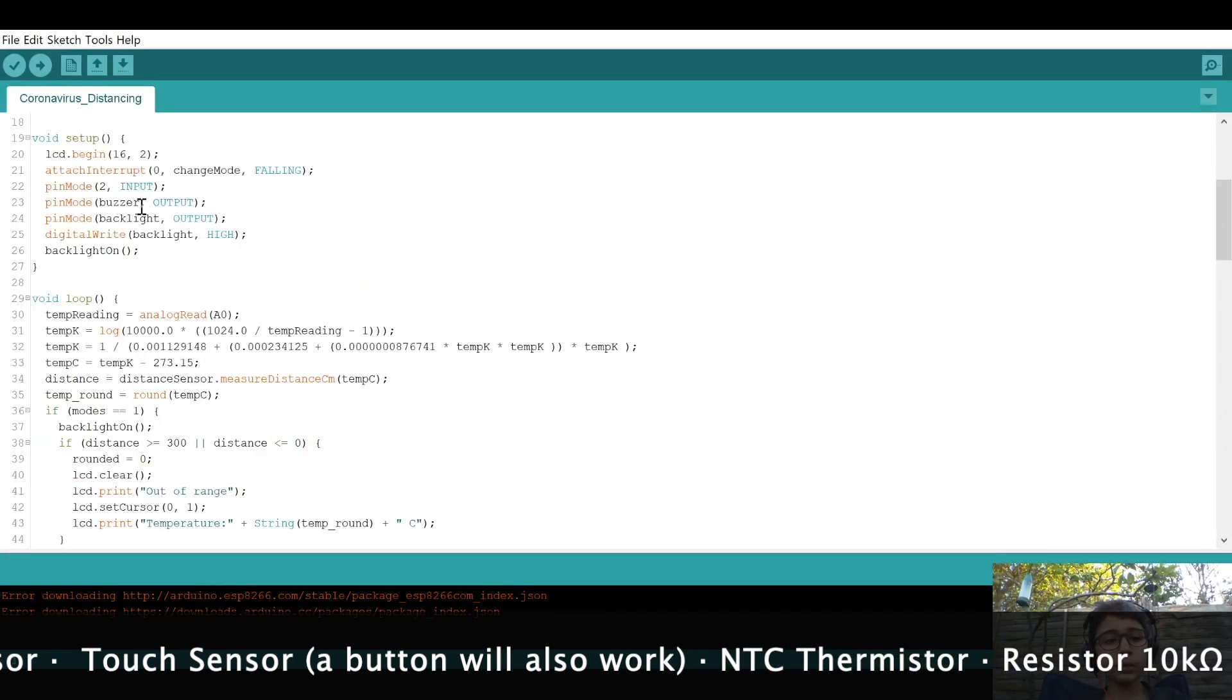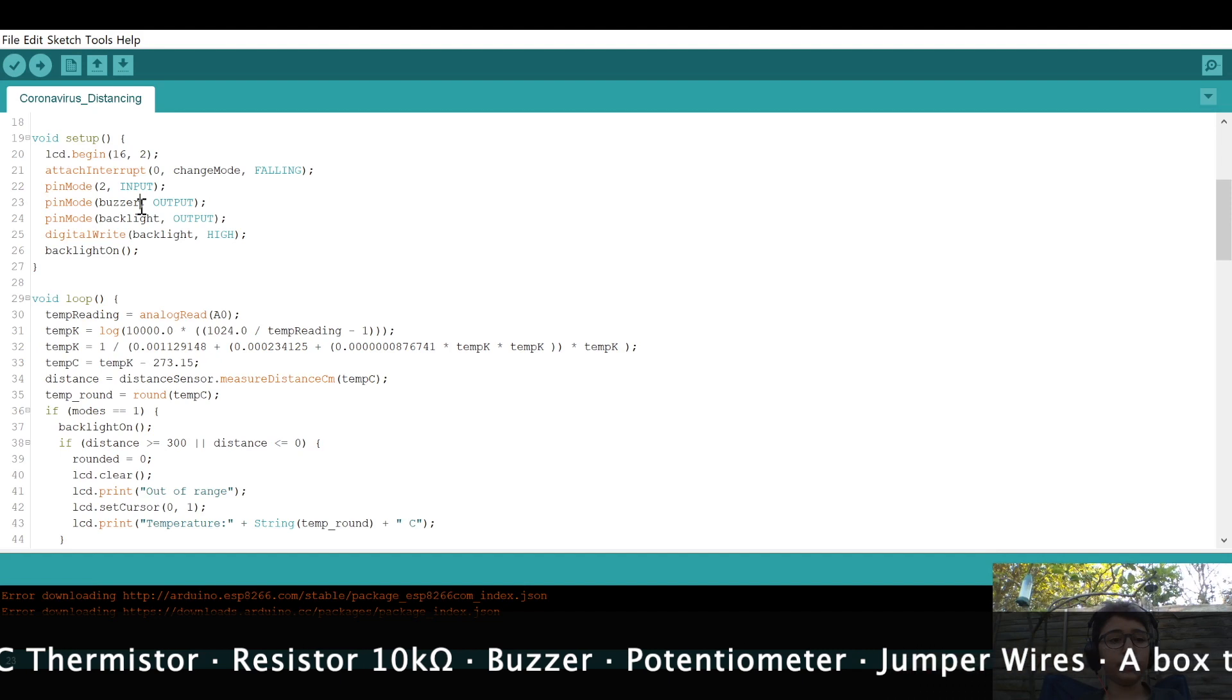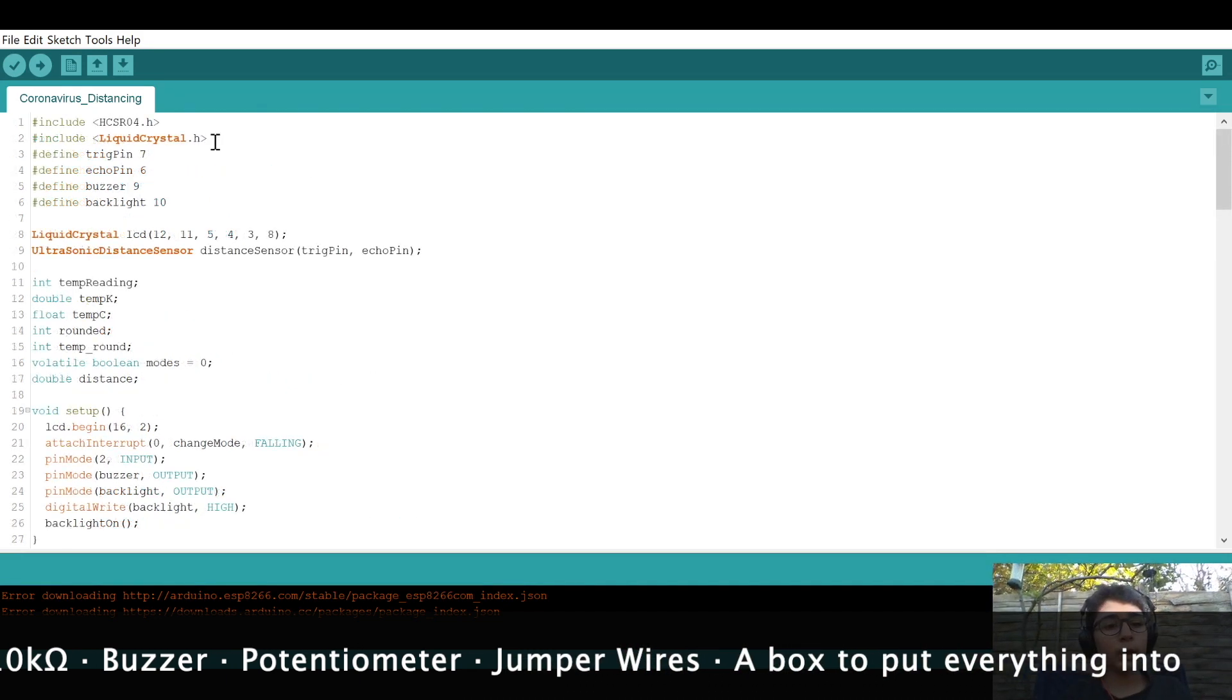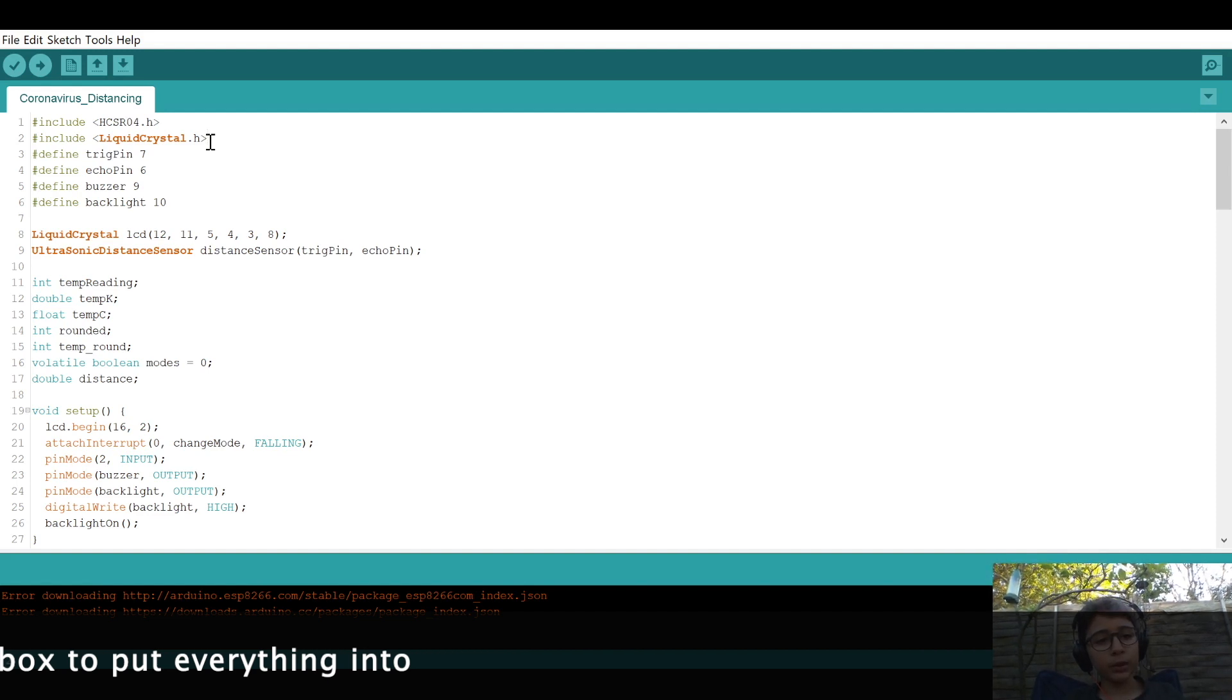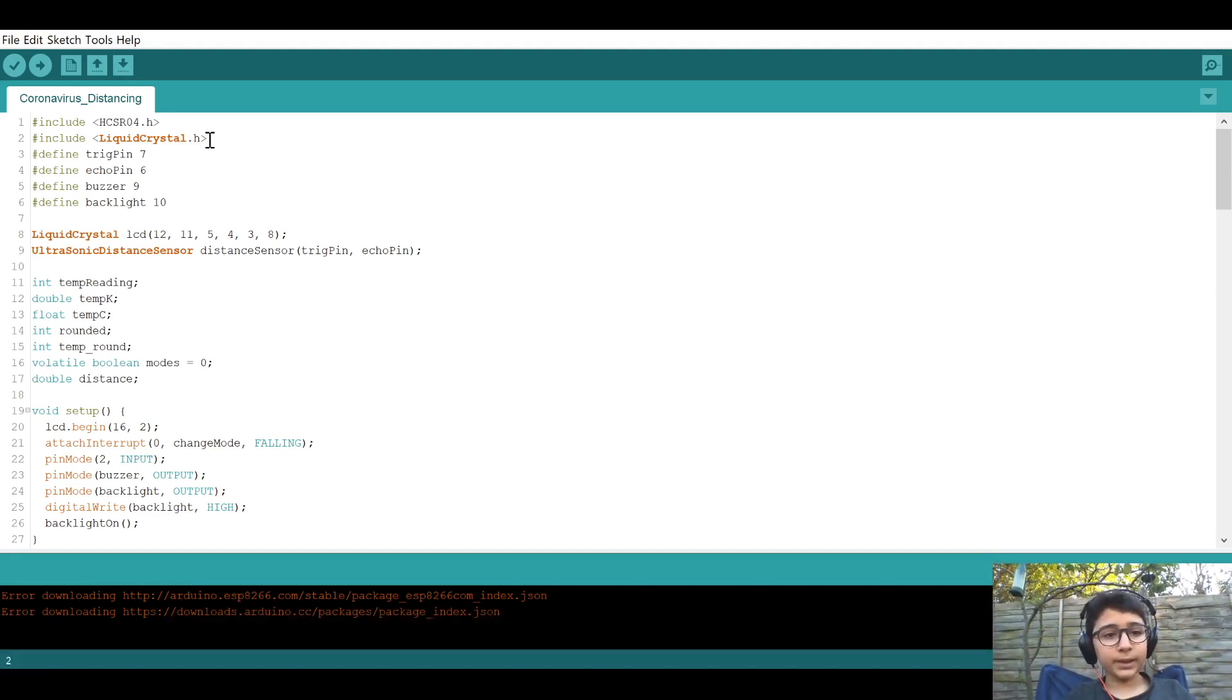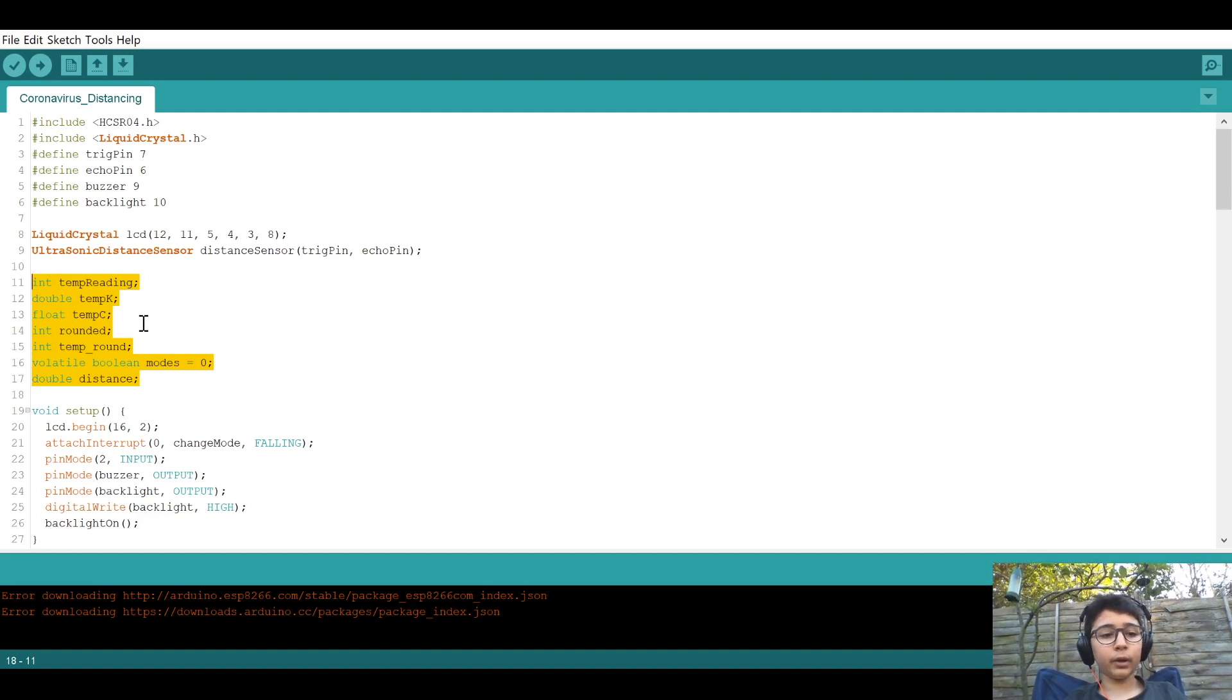The code can be found in the description. So I'll explain how the code works. First you need to download two libraries which I've included in the description. We first import the libraries into Arduino and then we create variables that will be used later in the code.